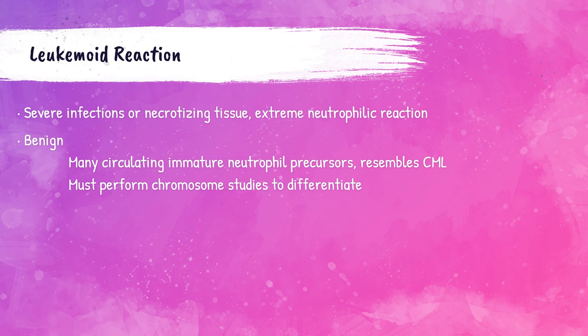A leukemoid reaction is an increase of white blood cells that mimics cancer, most commonly chronic myelogenous leukemia or CML. There are a lot of circulating immature neutrophil precursors in the blood, and chromosome studies are performed to differentiate it from cancer. It is caused by very severe infections or necrotizing tissues within the body — it's just a very extreme neutrophilic reaction, but it is benign. It just looks like cancer, but it's not.